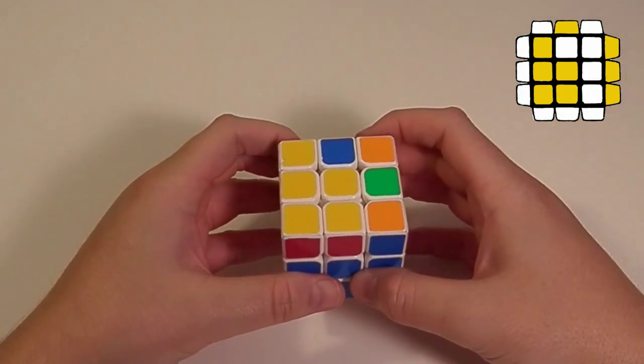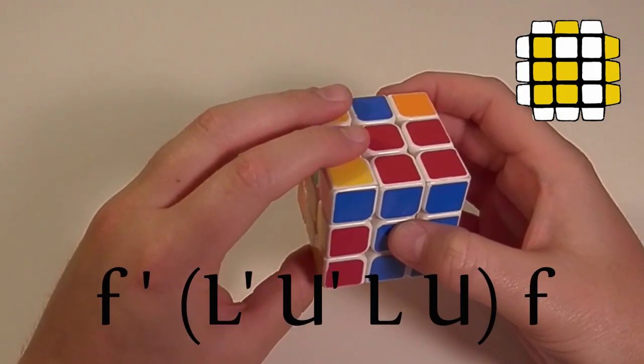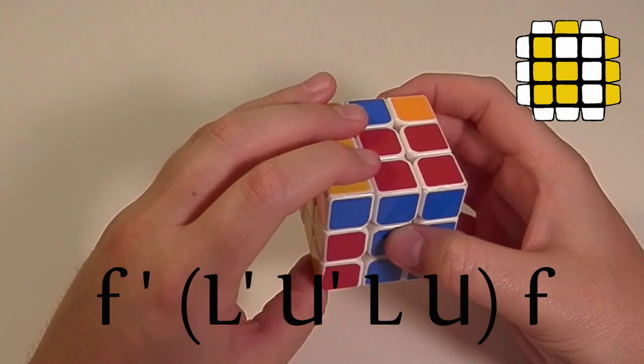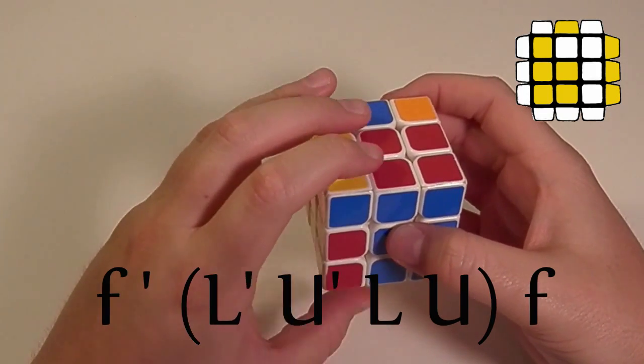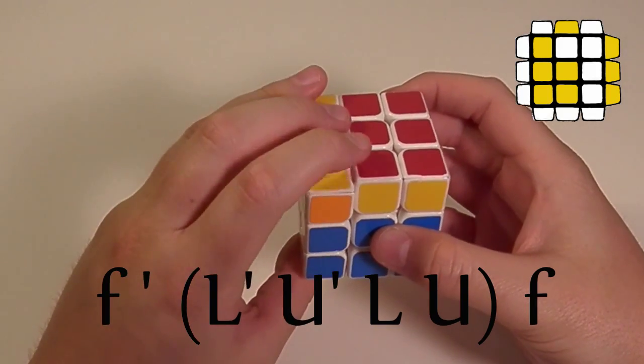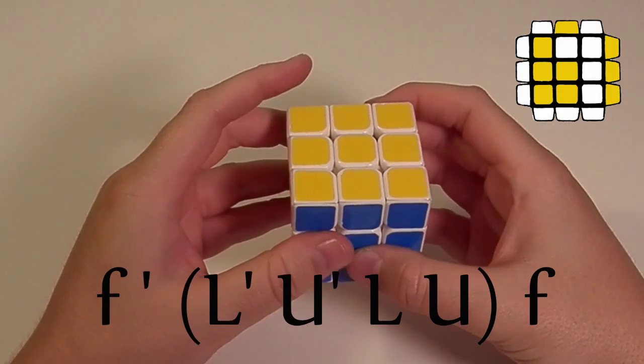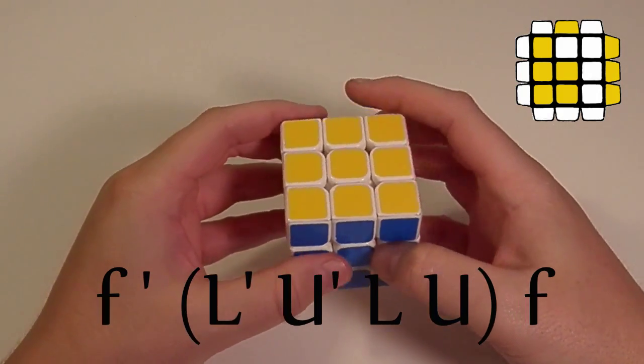And then you do this following algorithm. An F prime with your left hand. Then you do a sexy move, but with your left hand. So it's L prime, U prime, L, U. Then you undo your setup move with a small F. And then your layer is oriented.